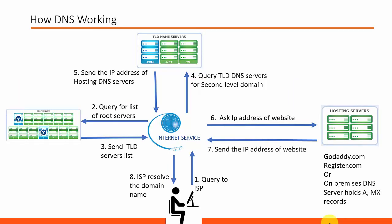Now we are going to see how DNS is actually working. Step 1: when you request a website, it sends a query to the local DNS server to resolve it. If the local DNS server does not hold any record for this domain, as a second step, it will query for a list of root servers which hold the name server IP address of top level domains like .com, .net, .info, etc.